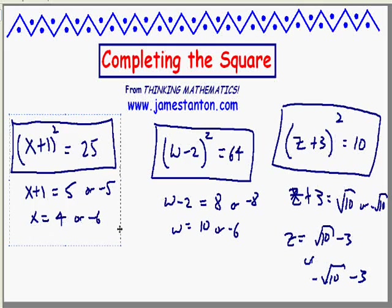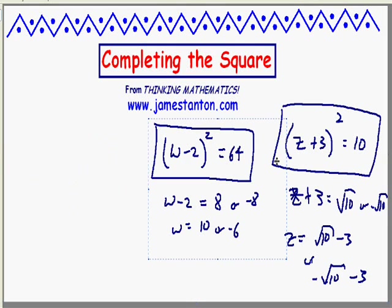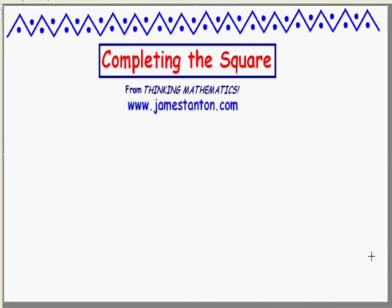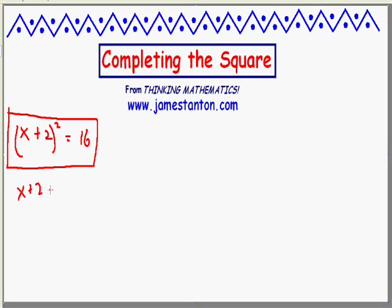But before we do that, let me just rewrite another one of these problems on the board and then show you the level 2 problems. Here goes. Let's change colours too for fun. Solving (x+2)² = 16. Not too bad. Something squared is 16. x+2 must be 4 or -4. Subtracting 2 throughout, x must be 2 or -6.